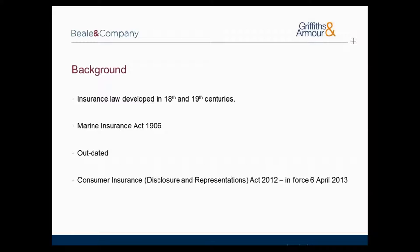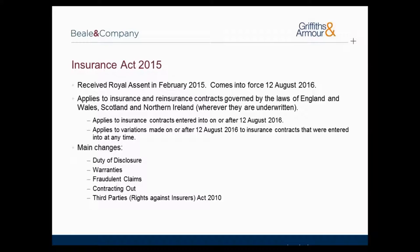As a result, the Law Commission decided it was necessary to update the existing law by removing outdated and onerous rules and replacing them with ones which are broadly neutral between insured and insurers. Consumer insurance law has already been updated by the Consumer Insurance Disclosure and Representations Act 2012, which came into force on the 6th of April 2013. The Insurance Act 2015 applies in respect of commercial insurance contracts, and finally comes into force on the 12th of August 2016. The new Act applies to insurance and reinsurance contracts governed by the laws of England and Wales, Scotland and Northern Ireland, and specifically to contracts entered into on or after the 12th of August 2016.